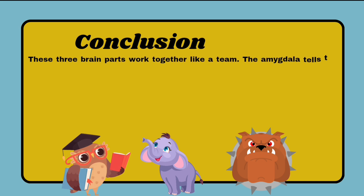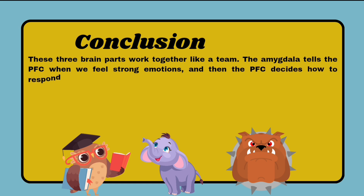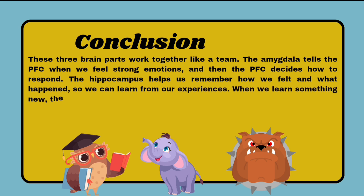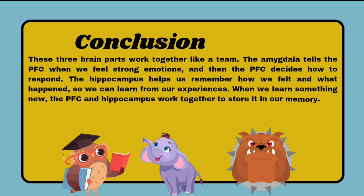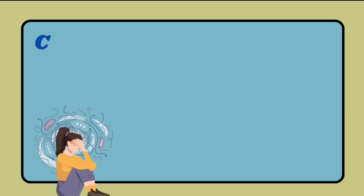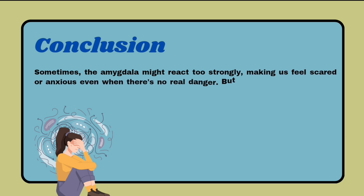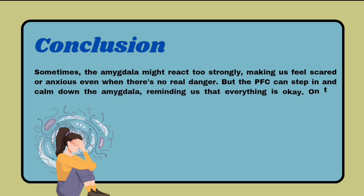In conclusion, these three brain parts work together like a team. The amygdala tells the prefrontal cortex when we feel strong emotions, and then the prefrontal cortex decides how to respond. The hippocampus helps us remember how we felt and what happened so we can learn from our experiences. Sometimes the amygdala might react too strongly, making us feel scared or anxious even when there's no real danger, but the prefrontal cortex can step in and calm it down.